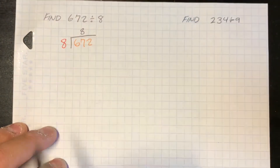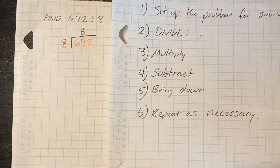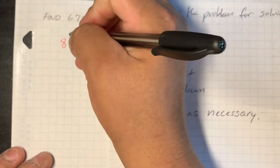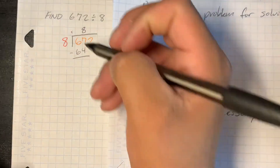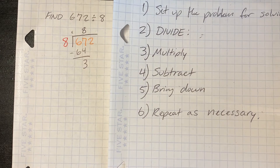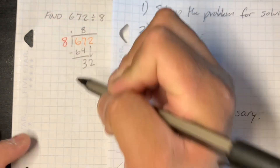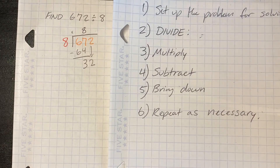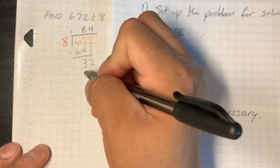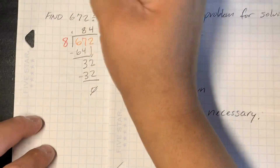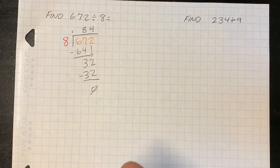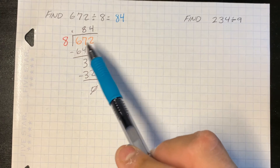8 can go into 67 eight times. The second step is to multiply: 8 times 8 is 64. The next step is to subtract: 67 take away 64 is 3. Then bring down that 2. Now how many times can 8 go into 32? The answer is 4. We divide 8 into 32 four times; 8 times 4 is 32, and 32 take away 32 is 0. So your quotient is 84, meaning we can divide 672 by 8 and get 84. We can make 8 groups of 84.